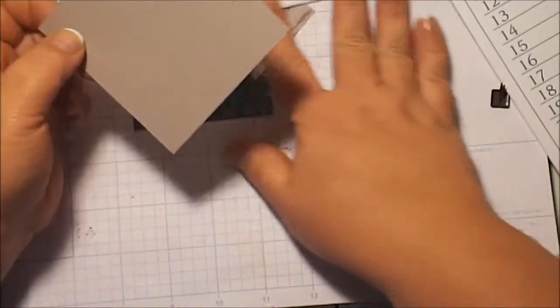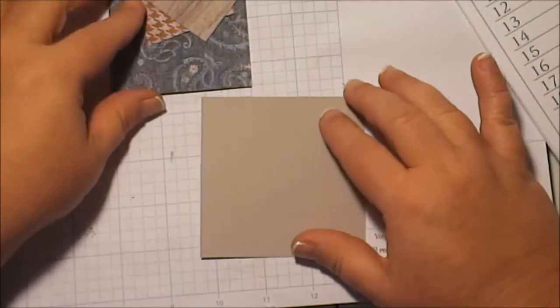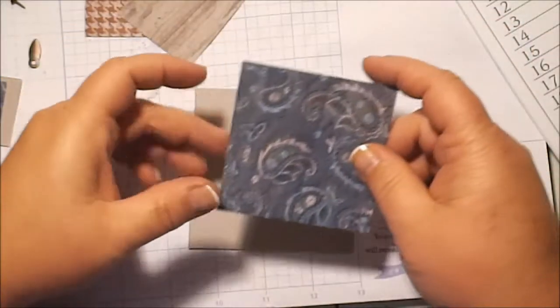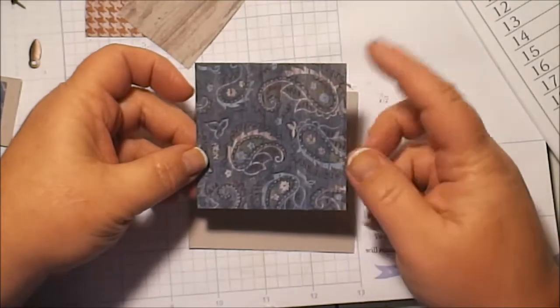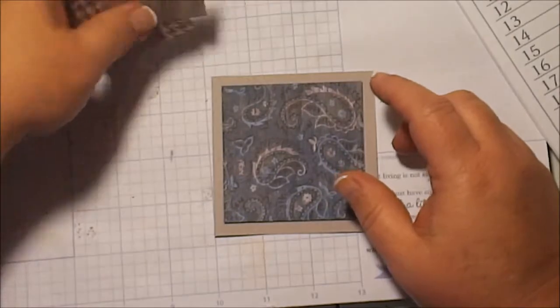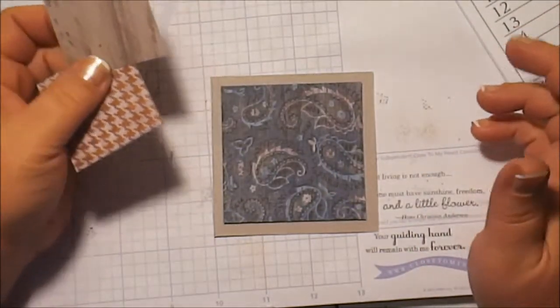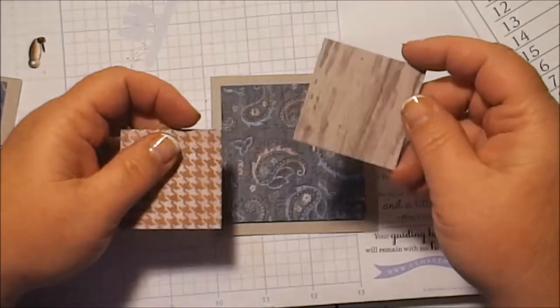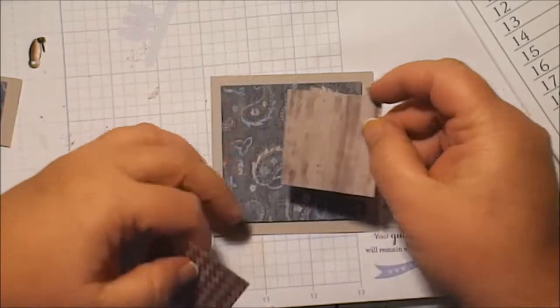For the first piece, I cut a piece of the gray cardstock at three and a half by three and a half. Then I cut a piece from the Dakota paper, of the blue with the paisley designs on it. I cut that at three by three. Then I cut two pieces, just because I love the paper, I couldn't decide. So I'm using a lot of it. I cut two more pieces at two by two. One is the wood grain and one is the houndstooth pattern.